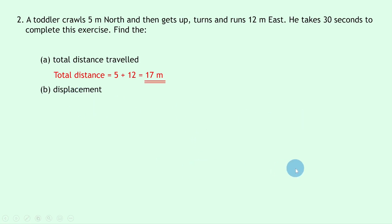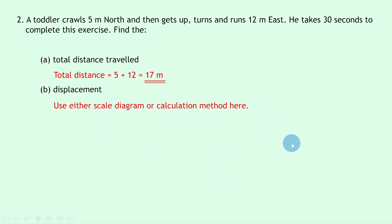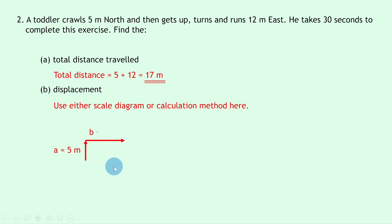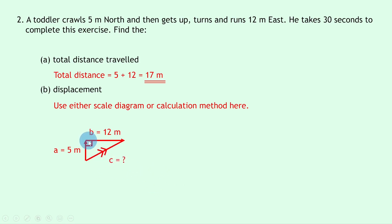Part b says to find the displacement. We can use either the scale diagram method or the calculation method — I'm going to use the calculation method because it's a bit quicker. Let's draw a sketch of the situation: we've got a vector going 5 meters north, let's call that side a, and then a vector going 12 meters east, let's call that side b. We can then draw a line from our starting to our finishing point — that is the resultant vector — and label our unknown side c, our right angle, and our angle theta next to the starting point.